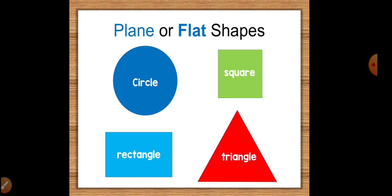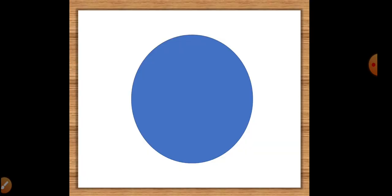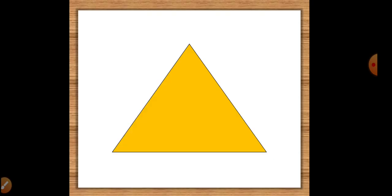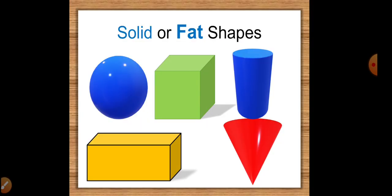Can you name some flat shapes on your own? Let's see. Square, circle, triangle, rectangle. Very good! Now, solid or fat shapes. Some shapes are solid or fat. These are sometimes...